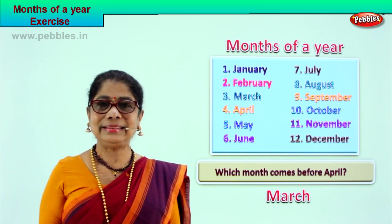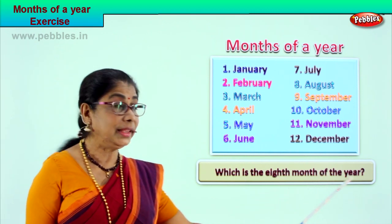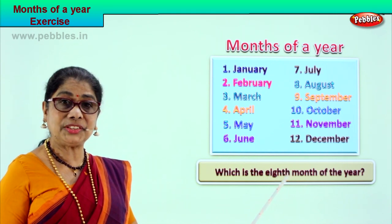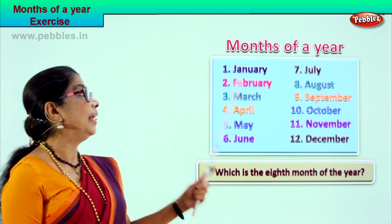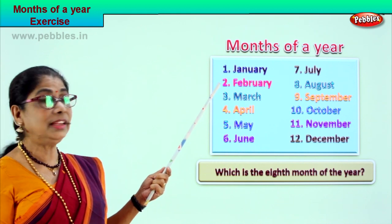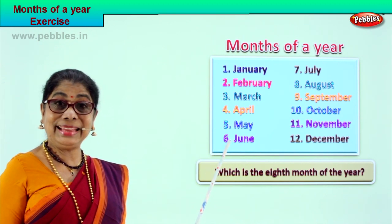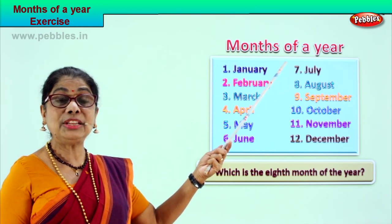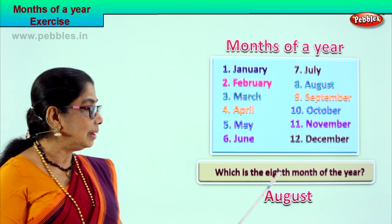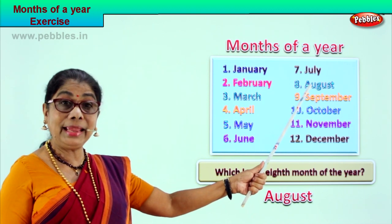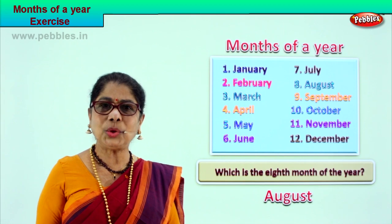Let's take another question: which is the 8th month of the year? Spell 8th: E-I-G-H-T-H. Look at the chart — 1st January, 2nd February, 3rd March, 4th April, 5th May, 6th June, 7th July, and the 8th month is August. Which is the 8th month of the year? August is the 8th month of the year. Spell August: A-U-G-U-S-T. Good. Did you enjoy the questions?